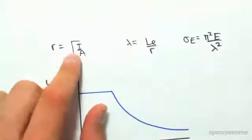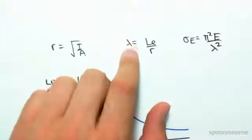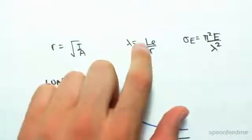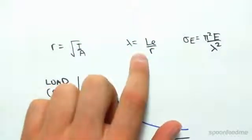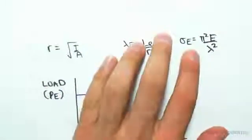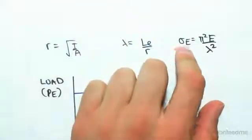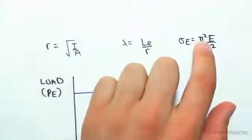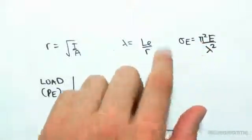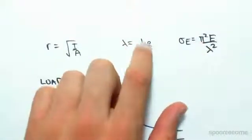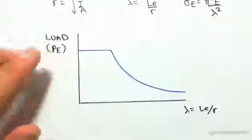The next thing we need to do is the radius of gyration, which is just I on A. Then we have lambda, which is the slenderness ratio, which is LE the effective length on r the radius of gyration. And then finally, the stress which causes Euler buckling is pi squared E, which is the elastic modulus, over lambda squared.